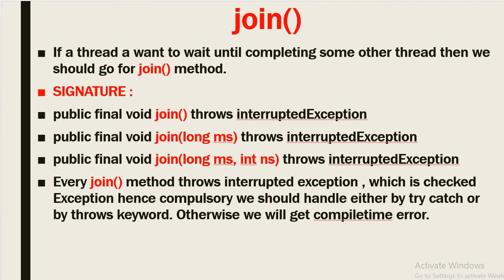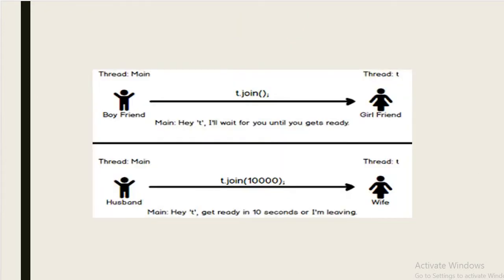Now what is the join method and when do we need to use it? If a thread wants to wait until completing some other thread, then we should use the join method. The signatures are: public void join(), public final void join(long ms), and public final void join(long ms, int nanoseconds). Every join method throws InterruptedException, which is a checked exception, so we must handle it either by try-catch or by using the throws keyword, otherwise we will get a compile-time error.